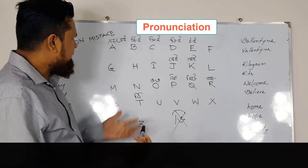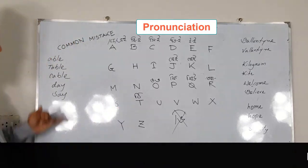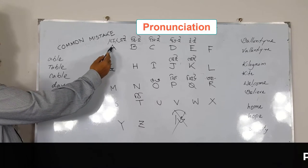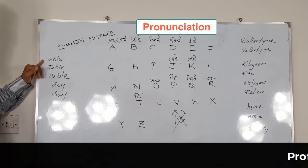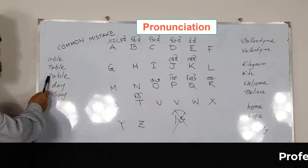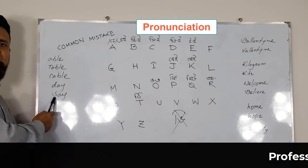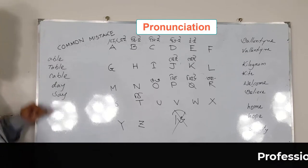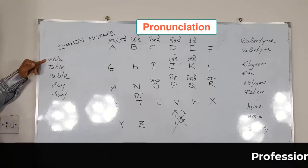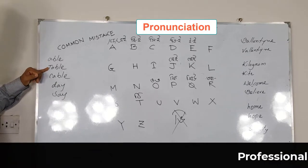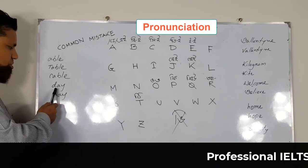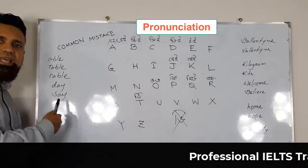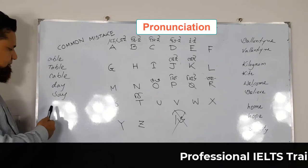Let's try with some words. A — here we say not 'able' but 'able'. Table. Cable. They. Say. Let's read again: able, table, cable, they, say. Not 'thay' — today, say.